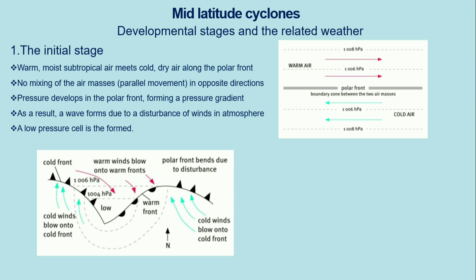As a result, a wave forms due to disturbances of winds in the atmosphere. As these two air masses travel in different directions, mountain ranges and atmospheric disturbances cause a wave to form. This wave is a result of disturbances due to mountain ranges, destabilizing the air movements.